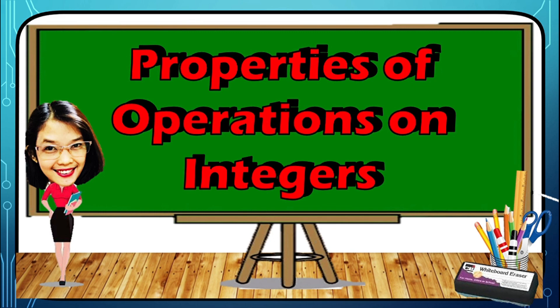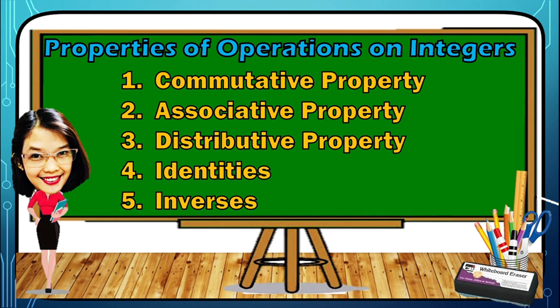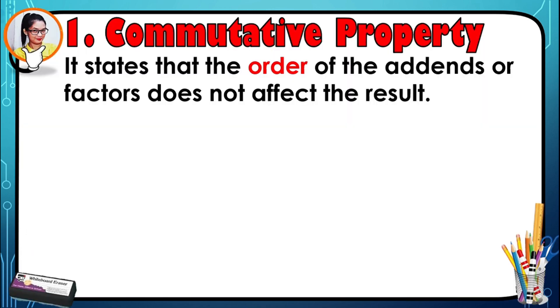This lesson is about properties of operations on integers. The properties we will cover are: commutative property, associative property, distributive property, identities, and inverses. Let us start with commutative property.